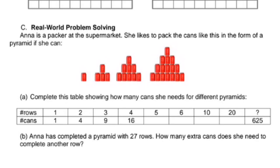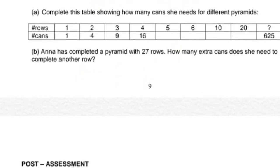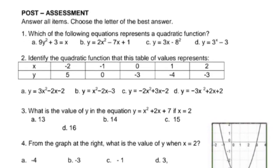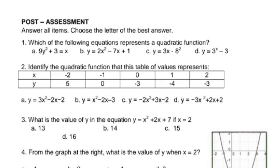Part C is a real-world problem: Anna is a packer at a supermarket who likes to stack cans in the form of a pyramid. Complete the table showing how many cans she needs for different pyramids. Then answer: Anna has completed a pyramid with 27 rows — how many extra cans does she need to complete another row? Finally, there is a 10-question post-assessment. Apply what you have learned. If you have questions, comment below. Thank you for watching and have a good day.